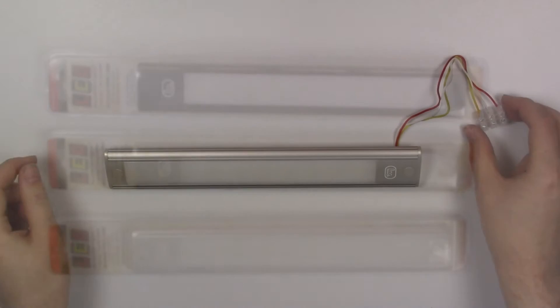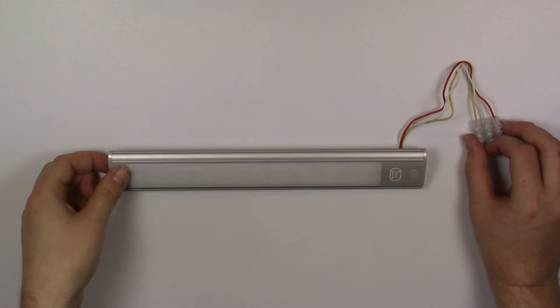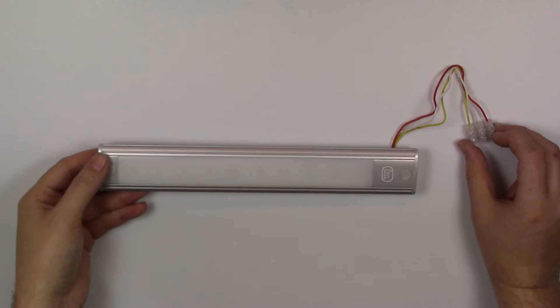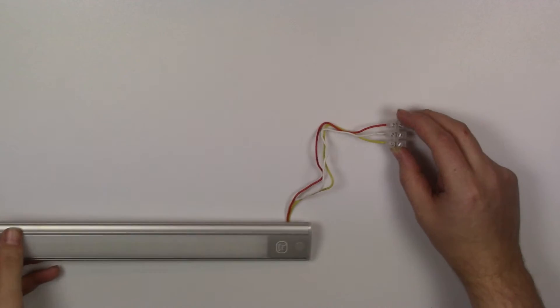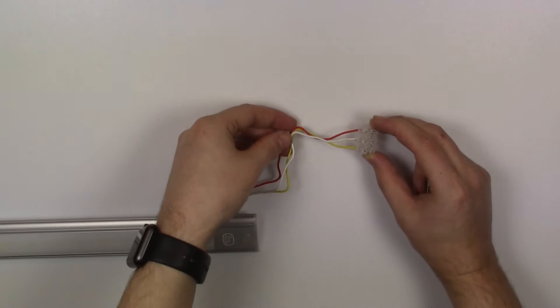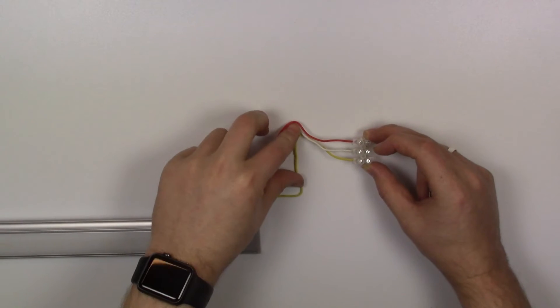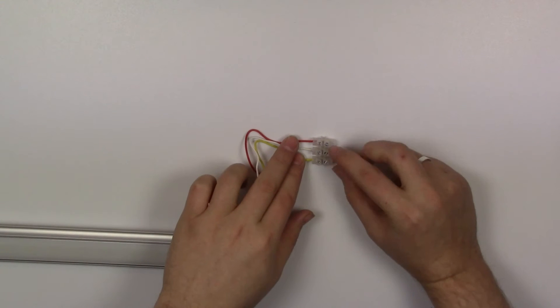Firstly we're going to be using the smaller light, 280 millimetres, and for the purpose of this video the three cables that come out the back have been placed into a terminal block. This will enable us to easily distinguish where they are connecting to.